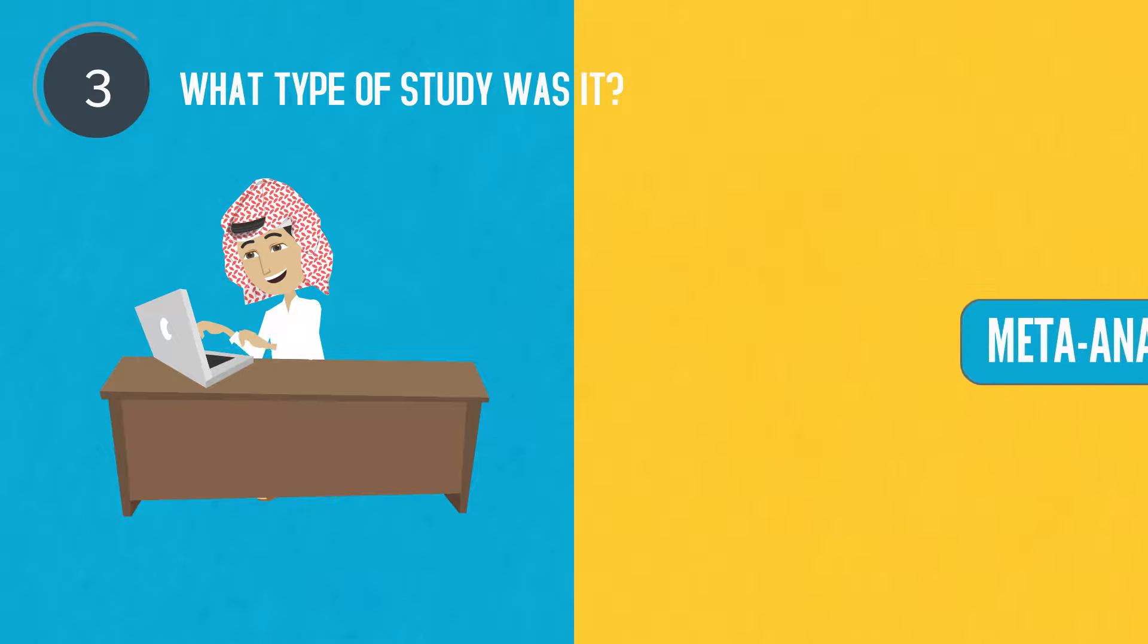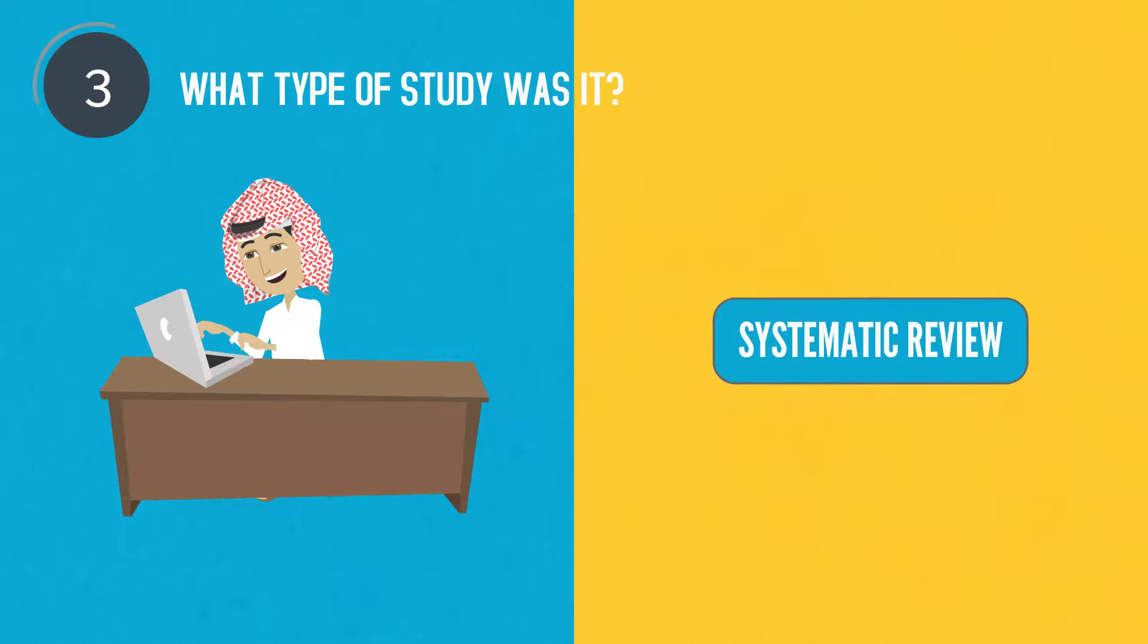Systematic review is an evaluation of all research studies that address a particular topic. Randomized controlled trial assigns participants to two or more groups randomly.